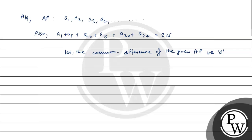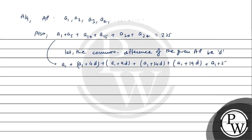Common difference ko D maan liya, vaisi D = A2 minus A1. To is information ko use karte hain: A1 ko A1 hi rehne dete hain. A5 = A1 plus 4D. Similarly, A10 = A1 plus 9D. A15 = A1 plus 14D. A20 = A1 plus 19D. A24 = A1 plus 23D. In sabka sum 225 ke equal hai.